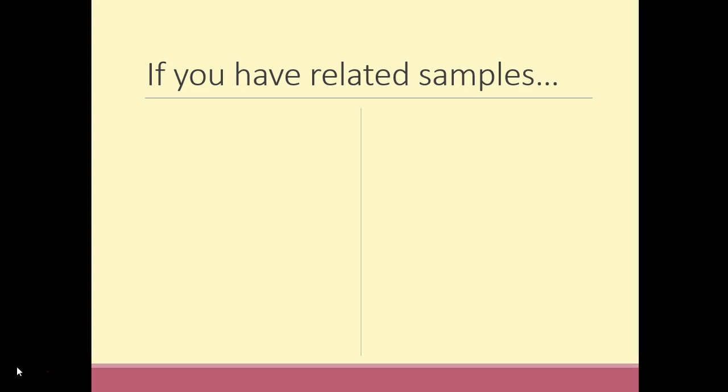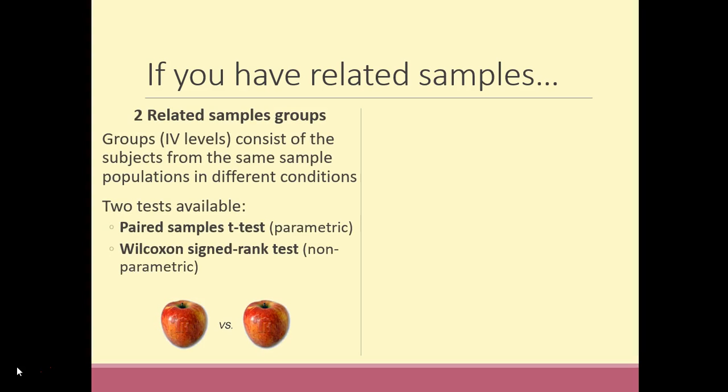Let's start with related samples data. Once you've ascertained that you have related samples data, you'll need to decide whether your data conform to the assumptions of parametric or non-parametric statistics. The parametric test for differences of a related samples group is called a paired samples t-test, and the non-parametric equivalent is called the Wilcoxon signed-rank test.